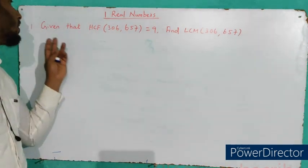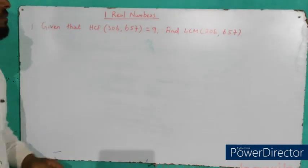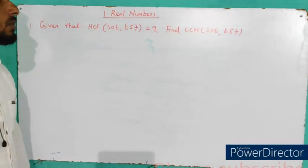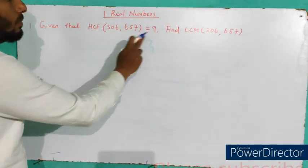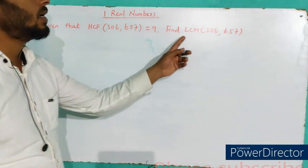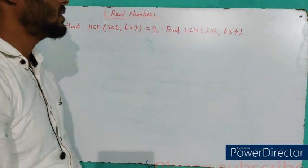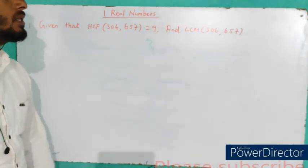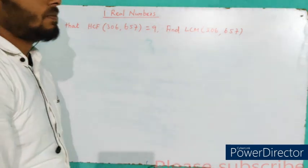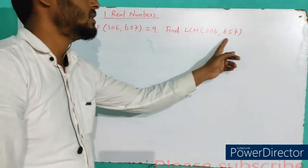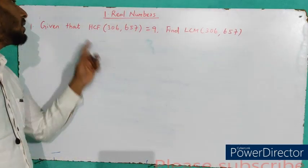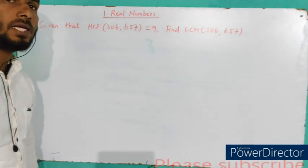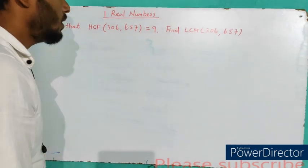The first question: given that HCF of 306 and 657 is equal to 9, we have to calculate the LCM of these two numbers. There are two methods — one method is using the formula, and another method is using the prime factorization method. Since HCF is given, we must apply the relationship between HCF and LCM formula.